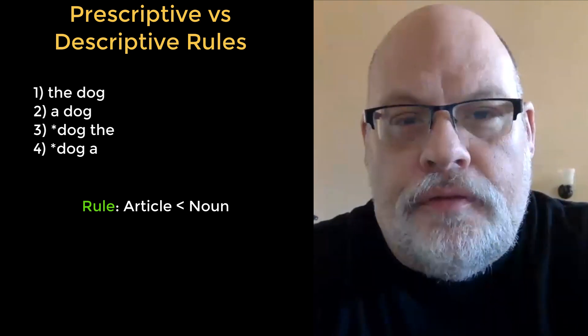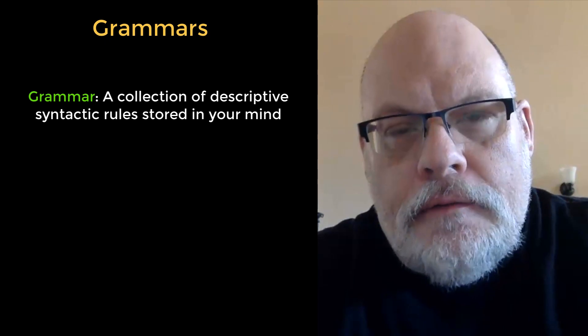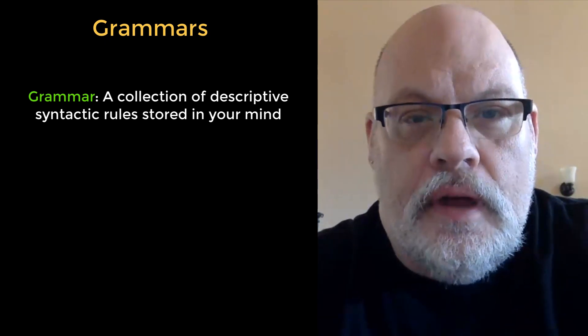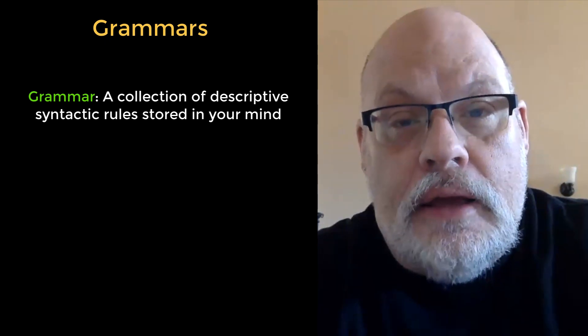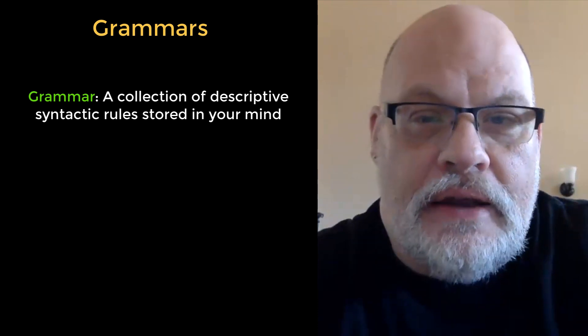When you collect together all those rules, you have a grammar. A grammar, then, for syntacticians, refers to a cognitive object, an object that we have in our mind that determines how we actually structure sentences and understand them.